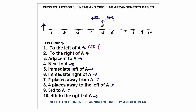The answer would be 'cannot be determined,' or B could be any one seat among one to four. Same way, B is sitting to the right of A. The right of A could be seat numbers six, seven, eight, nine, or ten. Again, the answer would be 'cannot be determined,' or B could sit at any seat from six to ten in linear arrangement.